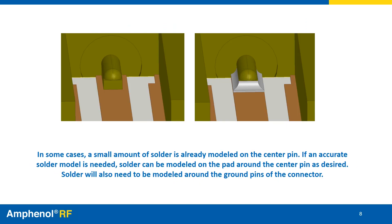In some cases, a small amount of solder is already modeled on the center pin. If an accurate solder model is needed, solder can be modeled on the pad around the center pin as desired. Solder will also need to be modeled around the ground pins of the connector.